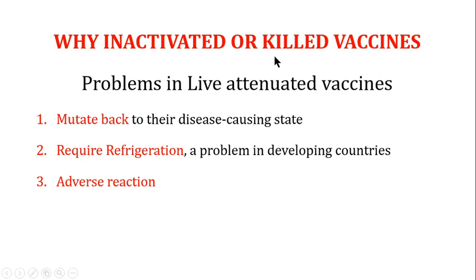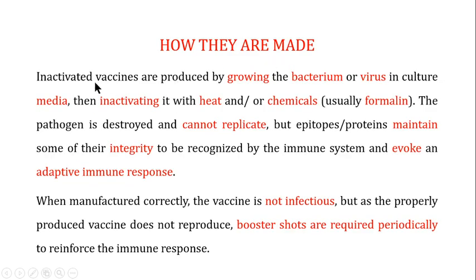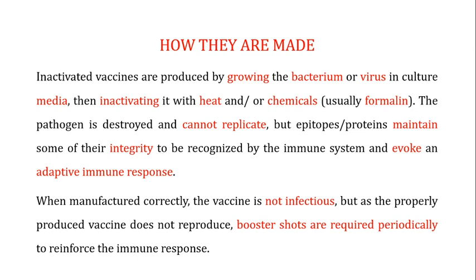How are inactivated or killed vaccines made? The inactivated vaccines are usually produced by growing the bacterium or virus in culture media — bacteria for bacterial vaccines, viruses for viral vaccines. After growing them, you inactivate them with heat or chemicals, the most common chemical being formalin. The heat or chemical destroys the pathogen so it cannot replicate, but the epitopes or proteins on the surface of the pathogen maintain some integrity, which is responsible for evoking the immune system and generating an adaptive immune response.